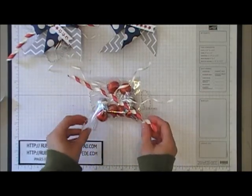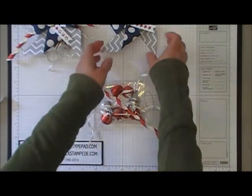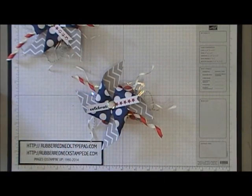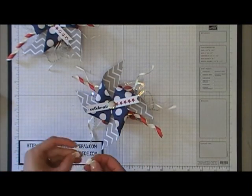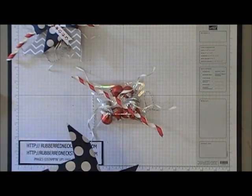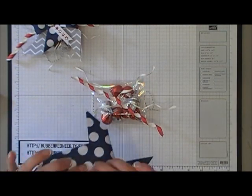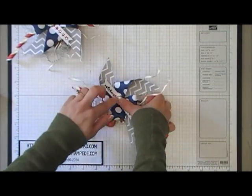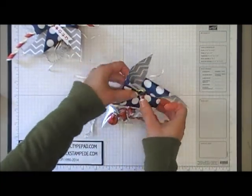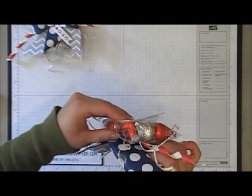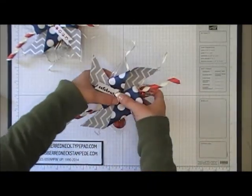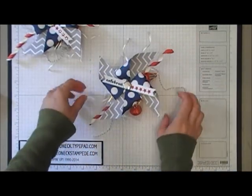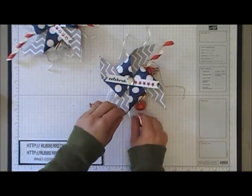So far, this is what your little treat bag will look like. Then you want to take your little pinwheel, and you're going to use a stamping dimensional for this. Just place a stamping dimensional right onto the back of your pinwheel, and then attach that right to your straw. How cute is that? What a fun, cute little gift to give somebody.